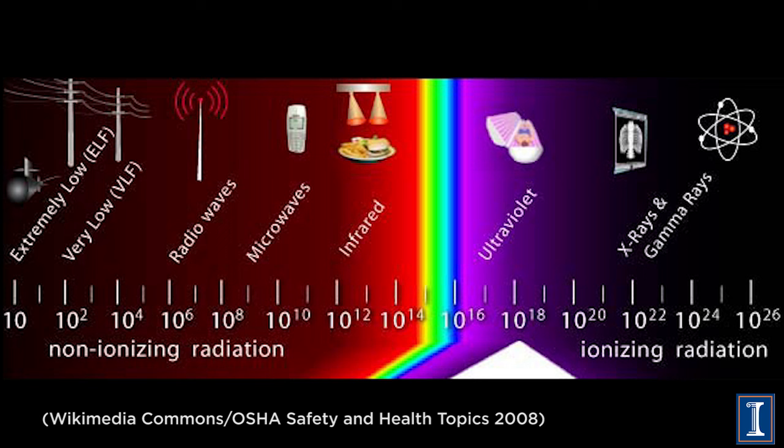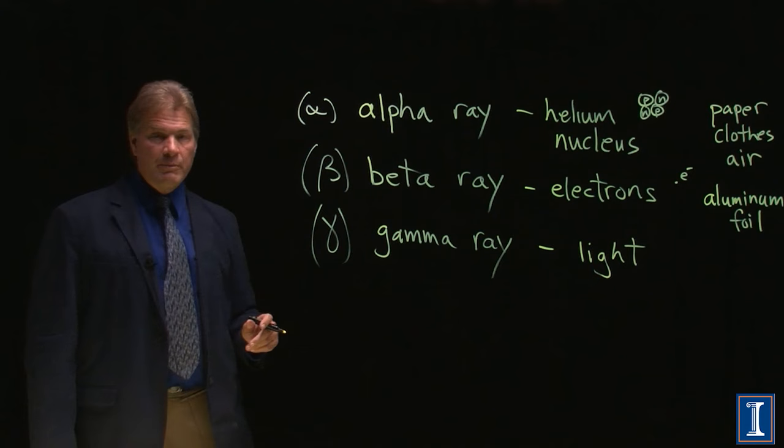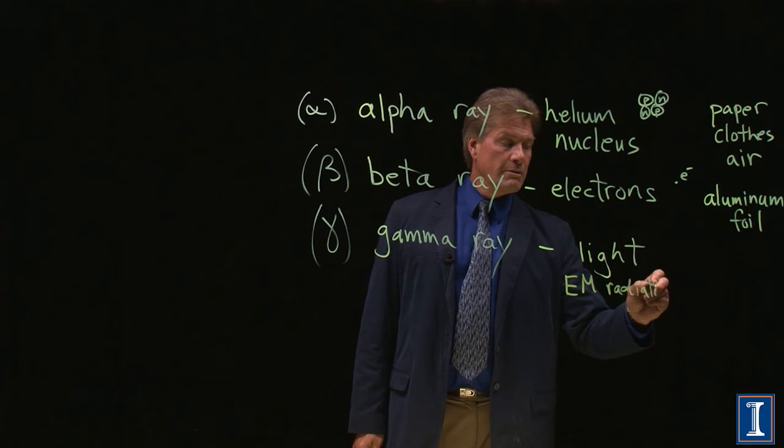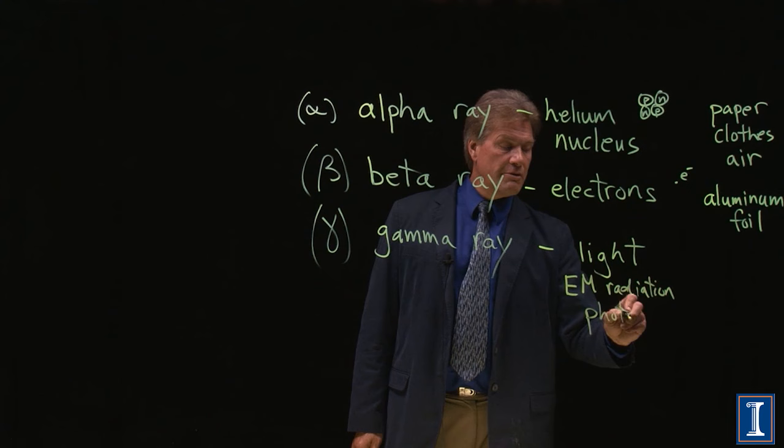We go up above the visible spectrum, you get the ultraviolet. That's how you get suntans. Going up a little bit more in energy, you can get up to x-rays to gamma rays. That's what we're talking about here. Gamma rays are high energy light, electromagnetic radiation, photons, high energy photons.